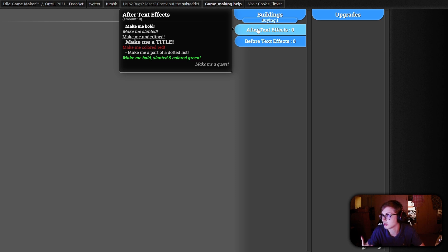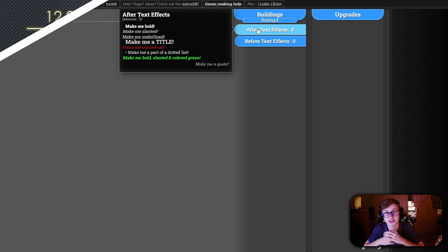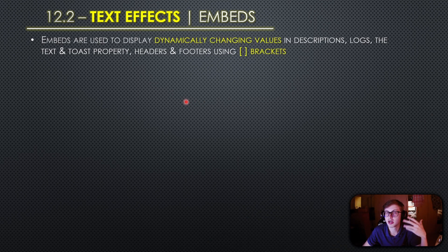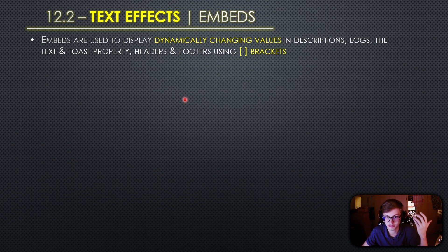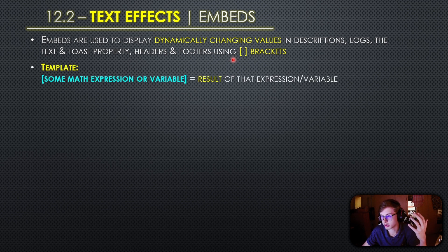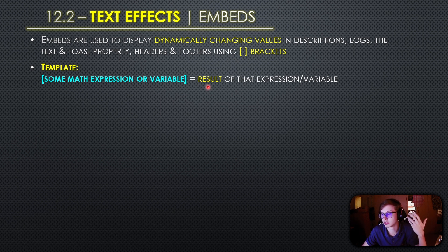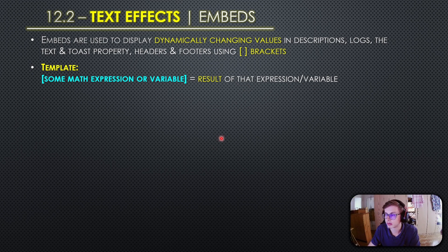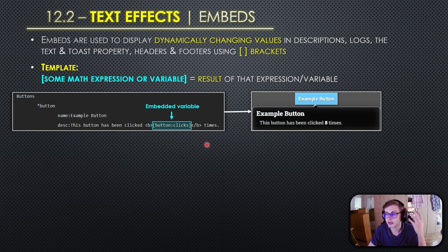Now let's take a look at the next text effect: embeds. As mentioned previously, embeds are used to display dynamically changing values in descriptions, logs, the text and toast property, as well as headers and footers. For this you use square brackets — you enclose a mathematical expression or variable within square brackets, and this will display the result of that expression in real time. Let's take a look at some practical uses for embeds.